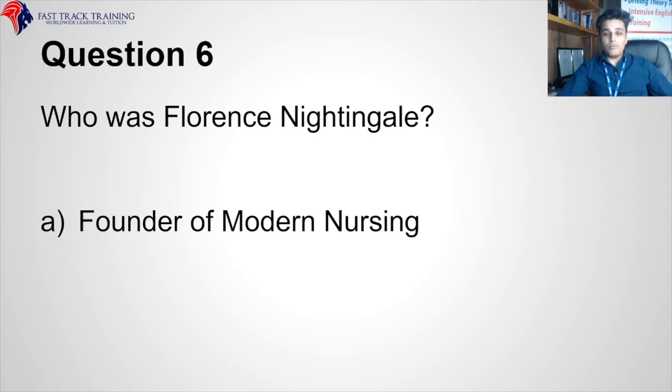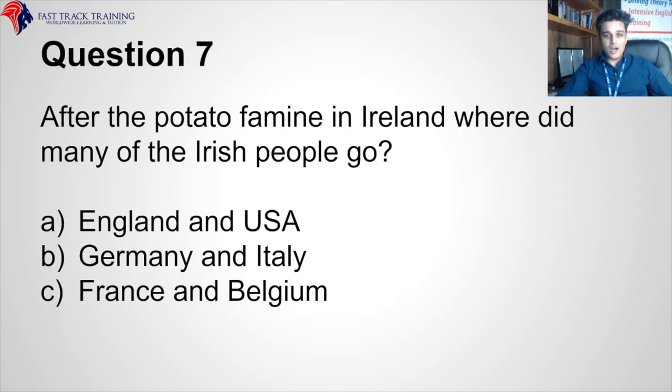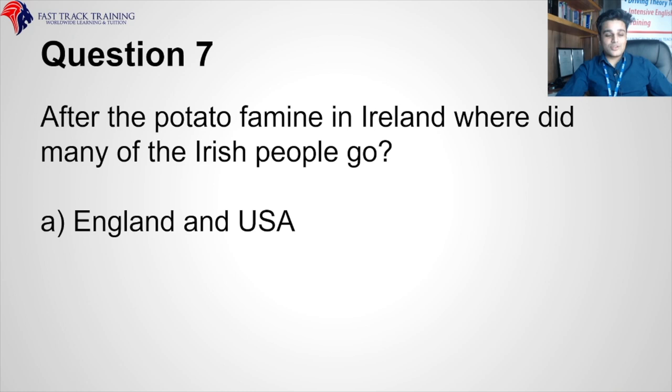After the potato famine in Ireland, where did many of the Irish people go — England and the USA, Germany and Italy, or France and Belgium? The correct answer is England and the USA.